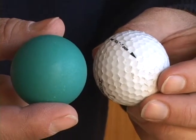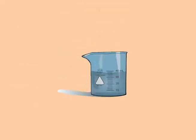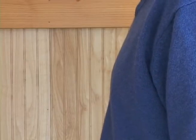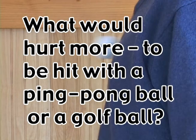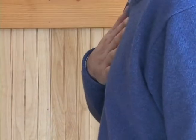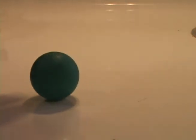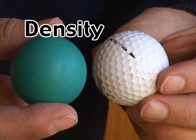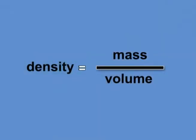This golf ball and ping pong ball are about the same size. What would hurt more — to be hit with a ping pong ball or a golf ball? A golf ball would hurt a lot more than a ping pong ball because a golf ball has a much greater density. Density is the amount of matter in a given amount of volume. We can calculate density using the formula: density equals mass divided by volume.